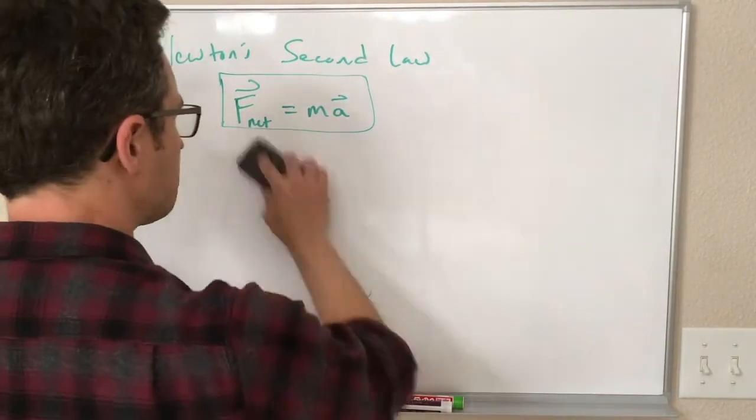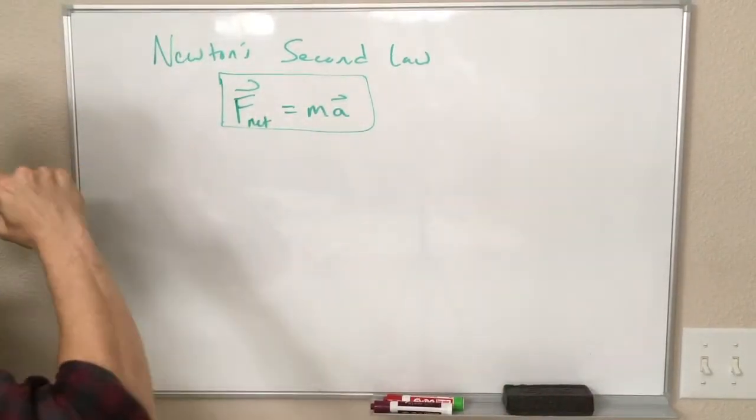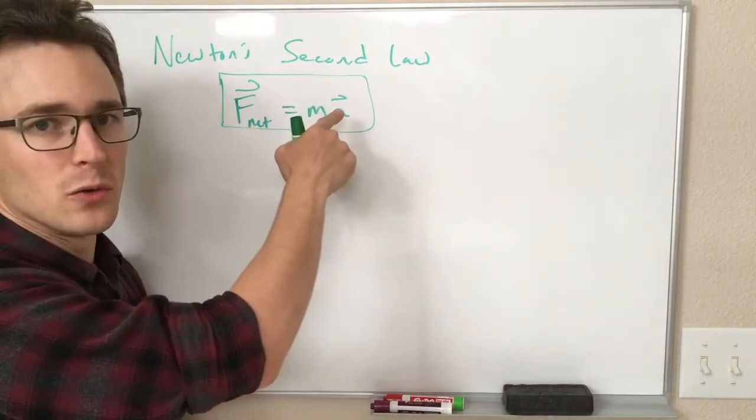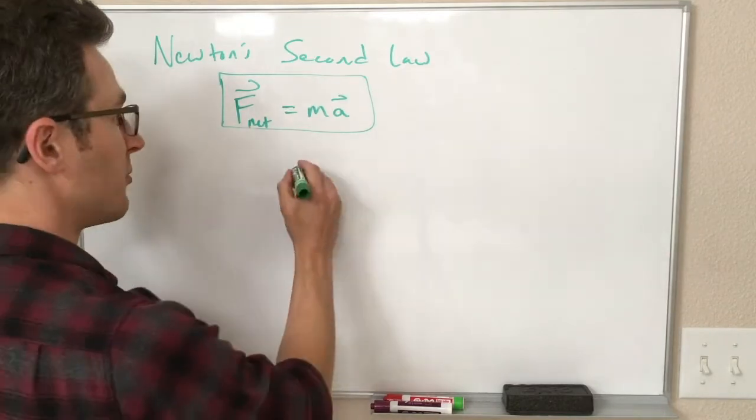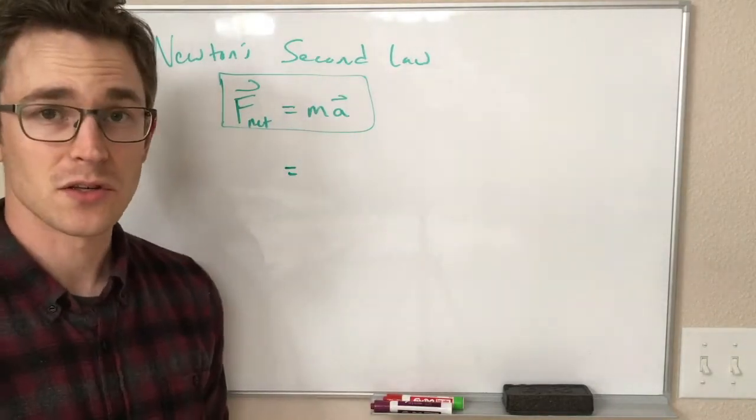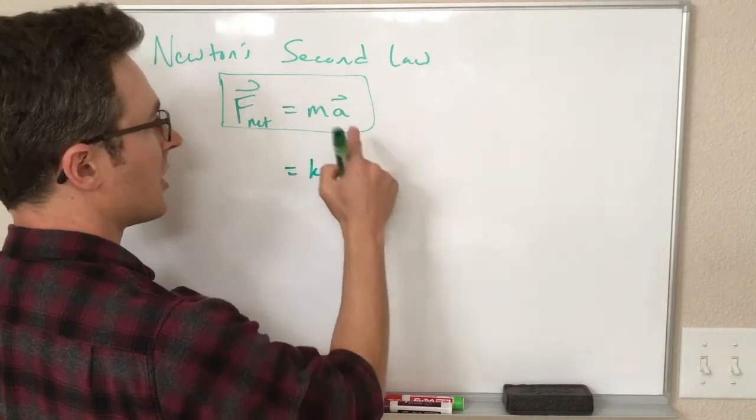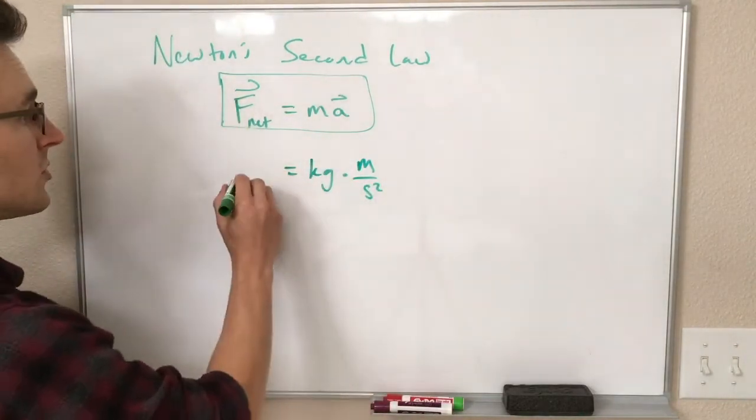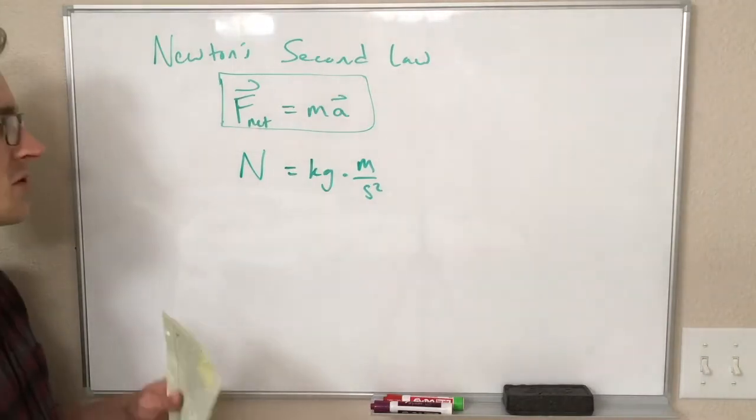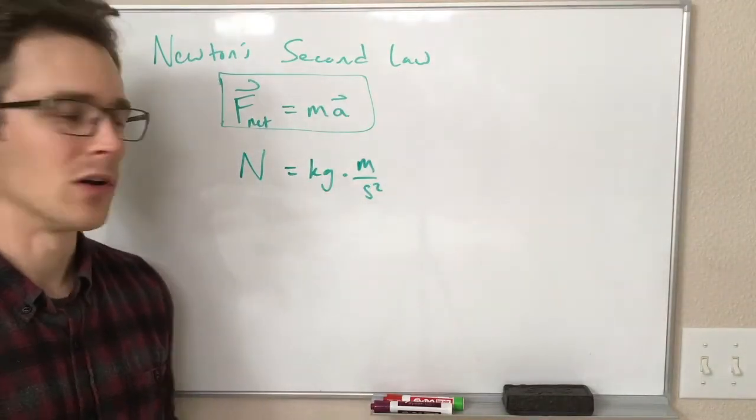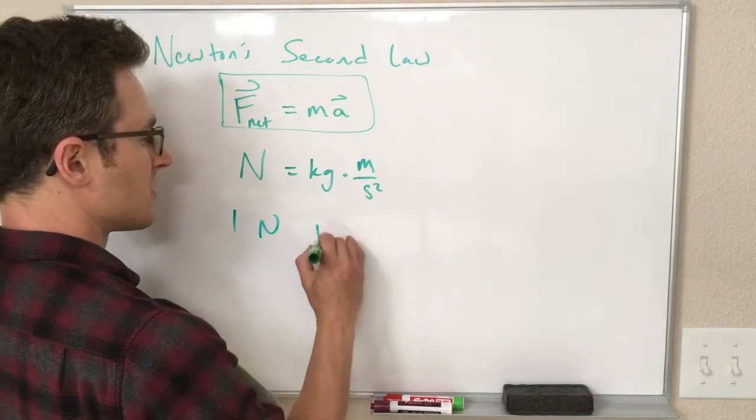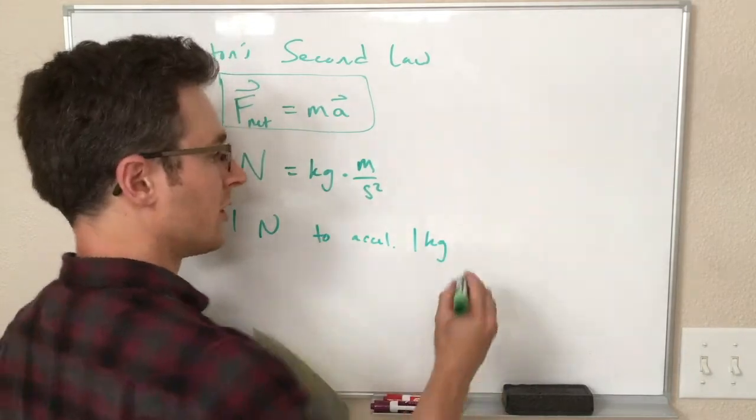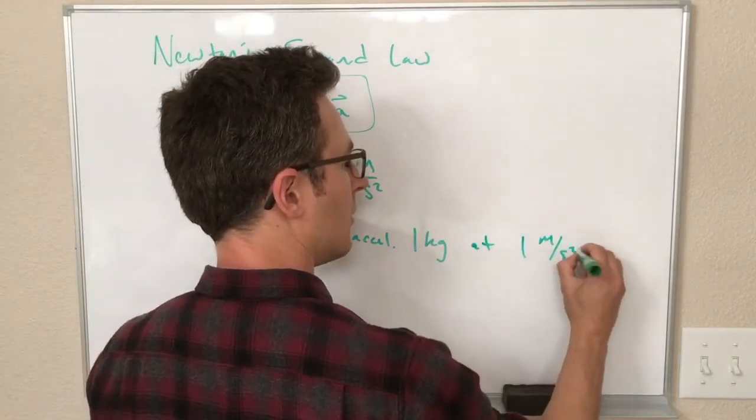So our units, let's talk about Newtons. If we keep everything in SI units on one side of the equation, we will always get our answer in SI units on the other side. So if I plug in mass and acceleration in SI units, I get kilograms times meters per second squared, and this is equal to the Newton.